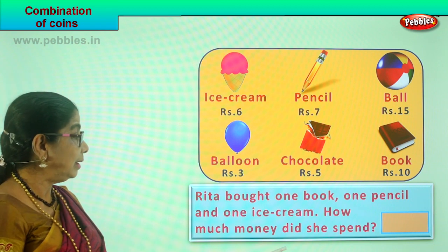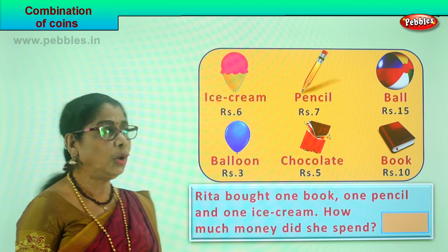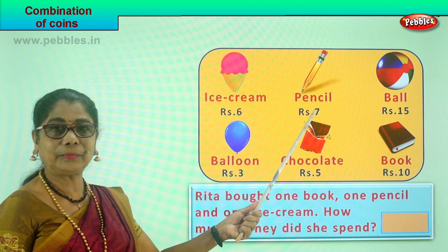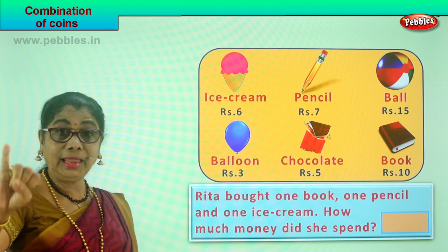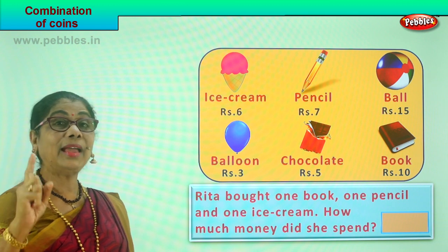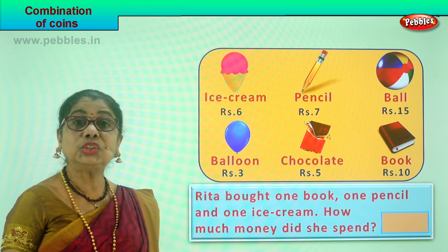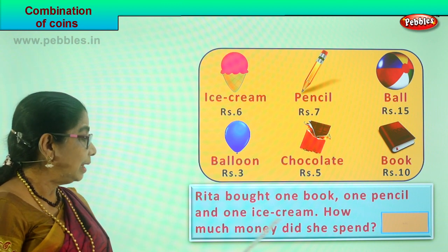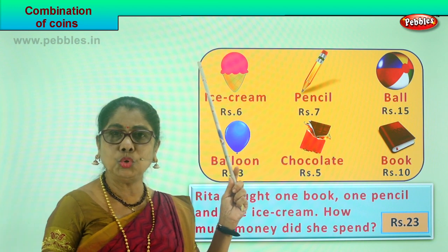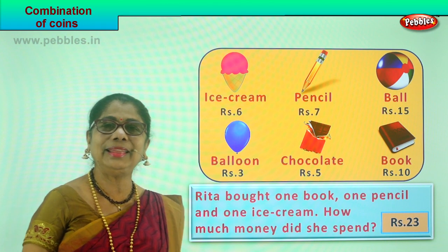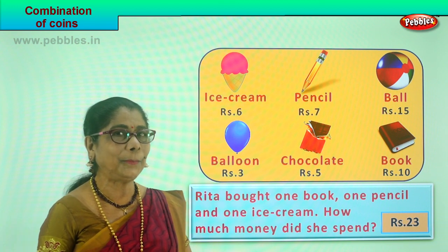The ice cream is six rupees — a five rupee coin plus a one rupee coin. Let's add them all: six plus seven — seven, eight, nine, ten, eleven, twelve, thirteen — six plus seven is thirteen. Thirteen plus ten is twenty-three rupees. That's how much Rita spent! Rita spent twenty-three rupees in coins to get a book, a pencil, and an ice cream. Did you enjoy the shopping?